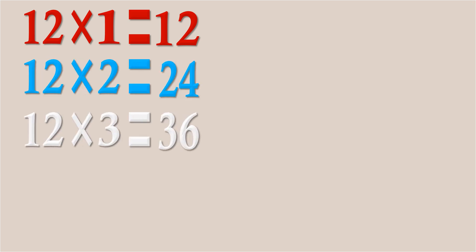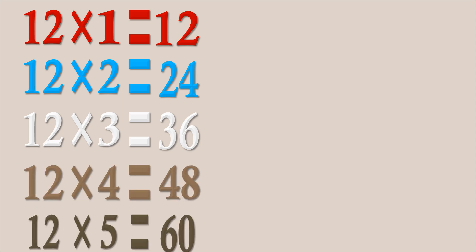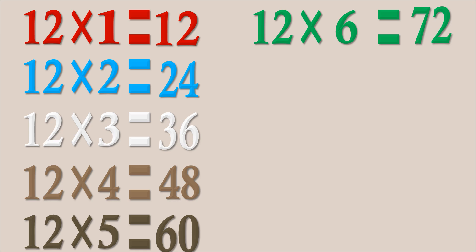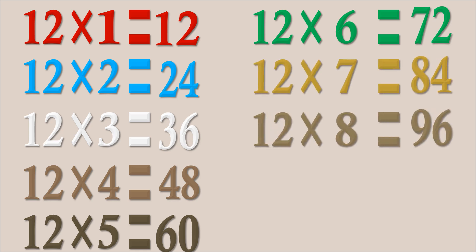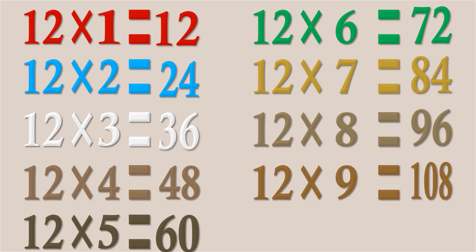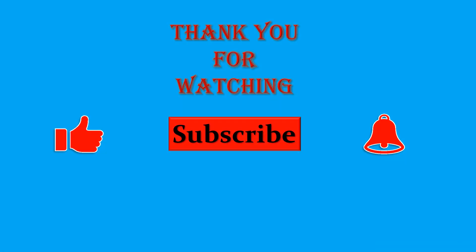Twelve threes are thirty-six, twelve fours are forty-eight, twelve fives are sixty, twelve sixes are seventy-two, twelve sevens are eighty-four, twelve eights are ninety-six, twelve nines are one hundred and eight, twelve tens are one hundred and twenty.